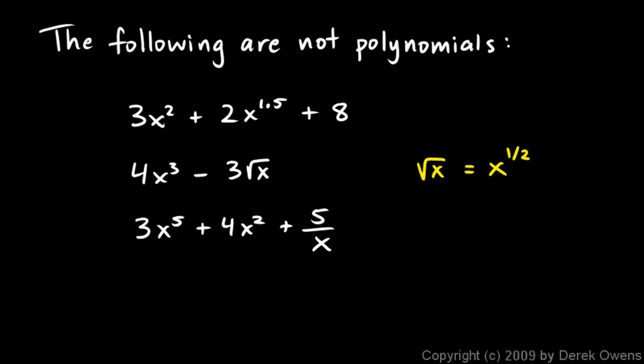A similar thing happens here: 3x to the fifth plus 4x squared plus 5 over x. You can't have a variable in the denominator. 1 over x is the same as x to the power of negative 1, so this term 5 over x is the same thing as 5 times x to the negative 1. Negative 1 is not a whole number. Whole numbers are 0, 1, 2, 3, and so on. You can't have a fractional or negative exponent. These three things are all valid mathematics, they're just not polynomials according to the definition.